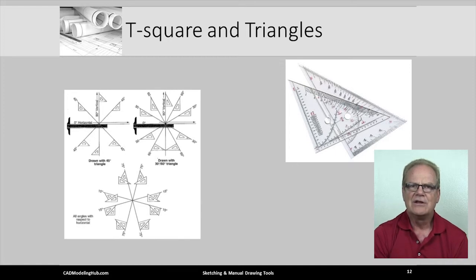Here I show an image found in the Bertolini textbook that illustrates how a 30-60 right triangle and or a 45-45 right triangle work together or in combination with a T-square to generate many other angles.